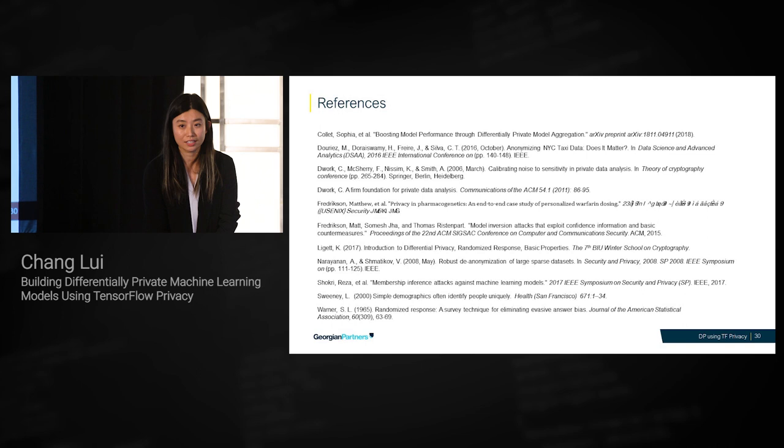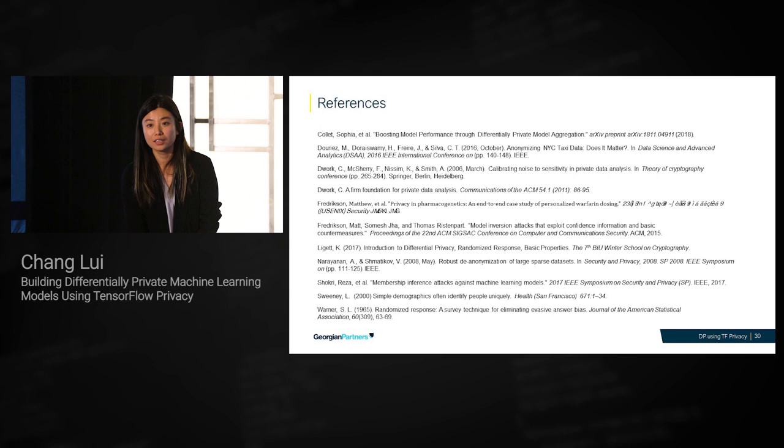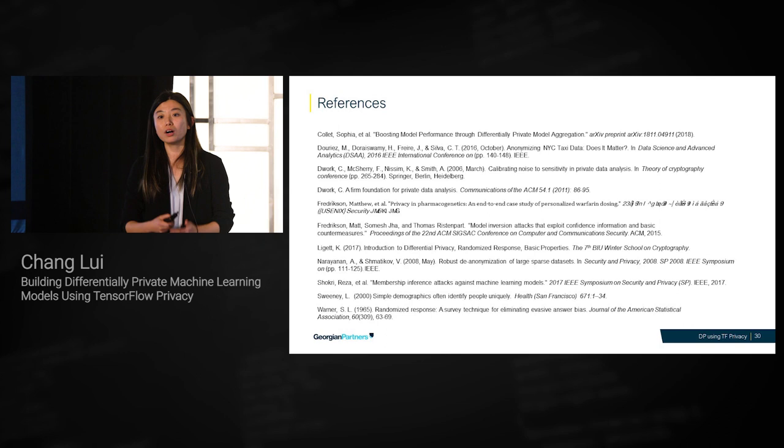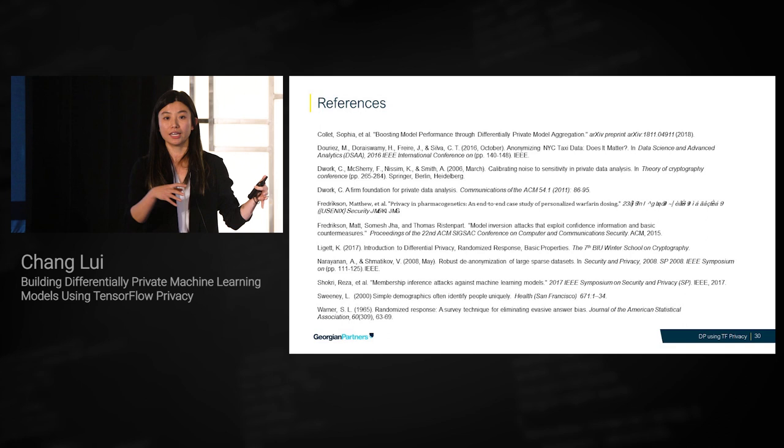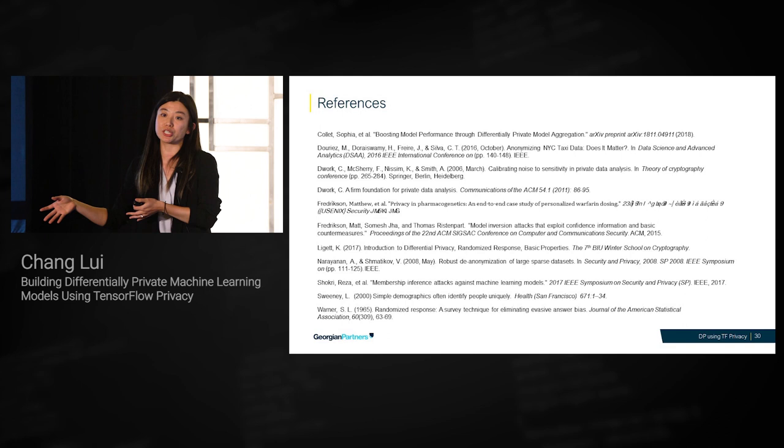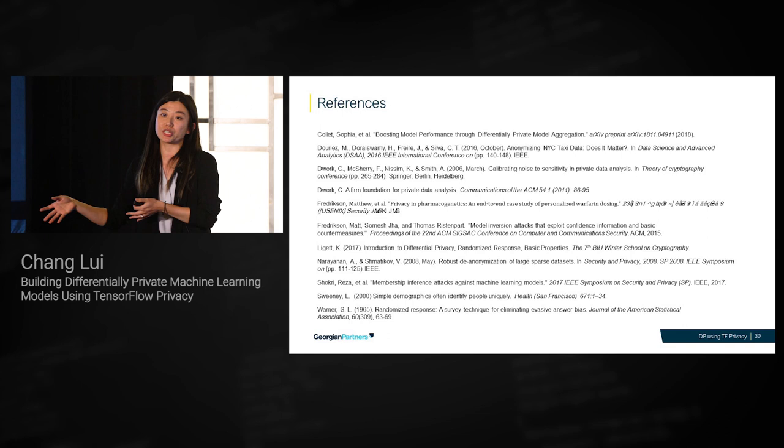Q: For recommendation during the first three months, how would you know that a user in one company is the same user in another company when you share both companies' data? A: The models are shared, not the raw data. For example, I train a model for Nike, and then as users come through Under Armour, I use Nike's model to make predictions for Under Armour's users. You don't know that this user here is that user there — so cross-user identity is not revealed.